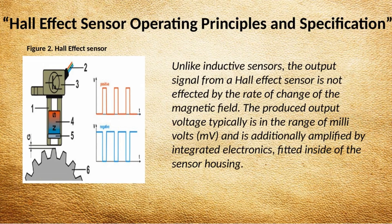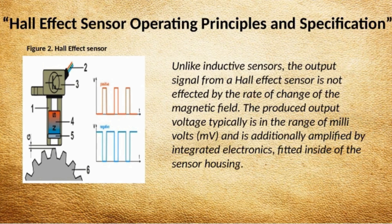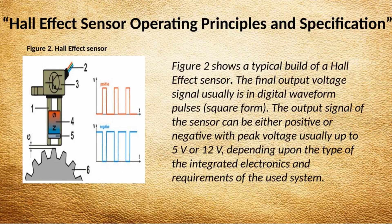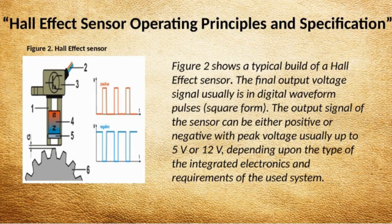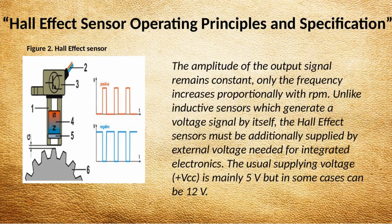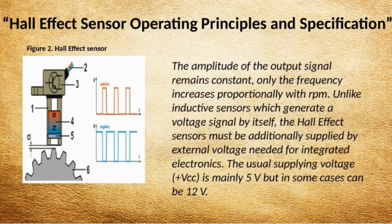Hall Effect Sensor Operating Principles and Specification. Unlike inductive sensors, the output signal from a Hall effect sensor is not affected by the rate of change of the magnetic field. The produced output voltage is typically in the range of millivolts and is additionally amplified by integrated electronics fitted inside the sensor housing. Figure 2 shows a typical build of a Hall effect sensor. The final output voltage signal is usually in digital waveform pulses. The output signal can be either positive or negative, with peak voltage usually up to 5 volts or 12 volts depending upon the type of integrated electronics and requirements of the system. The amplitude of the output signal remains constant; only the frequency increases proportionally with RPM.